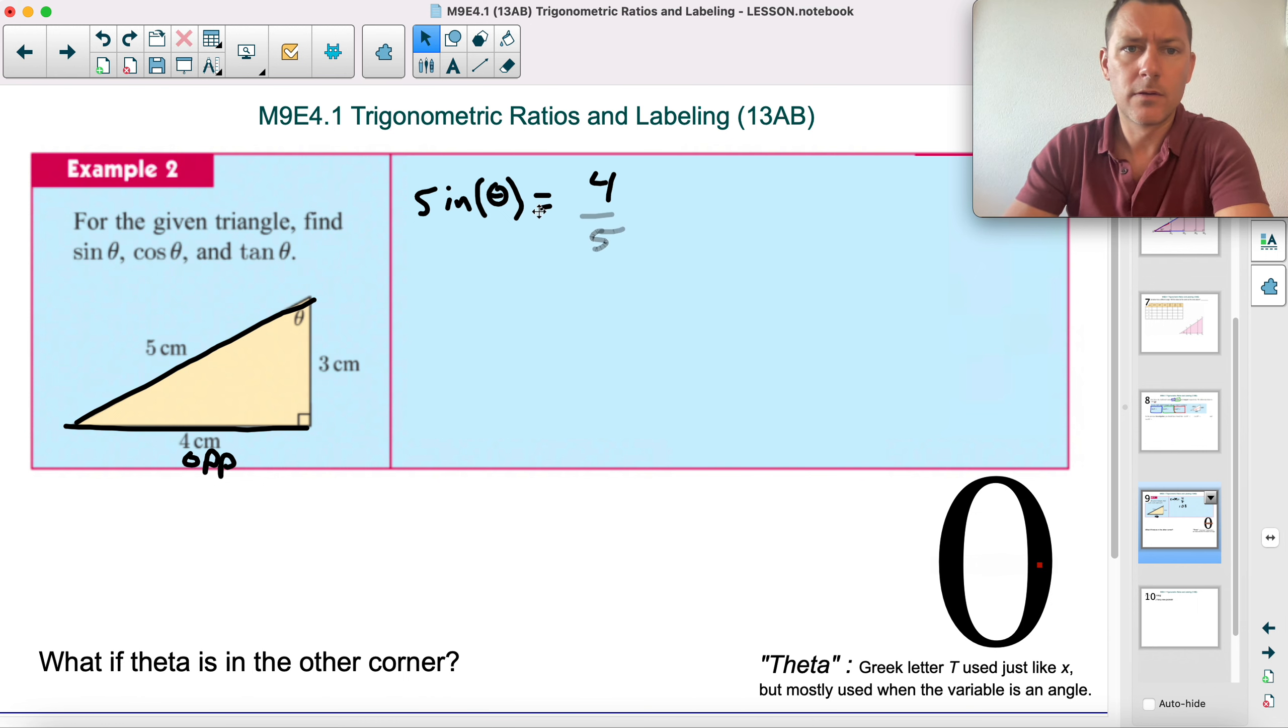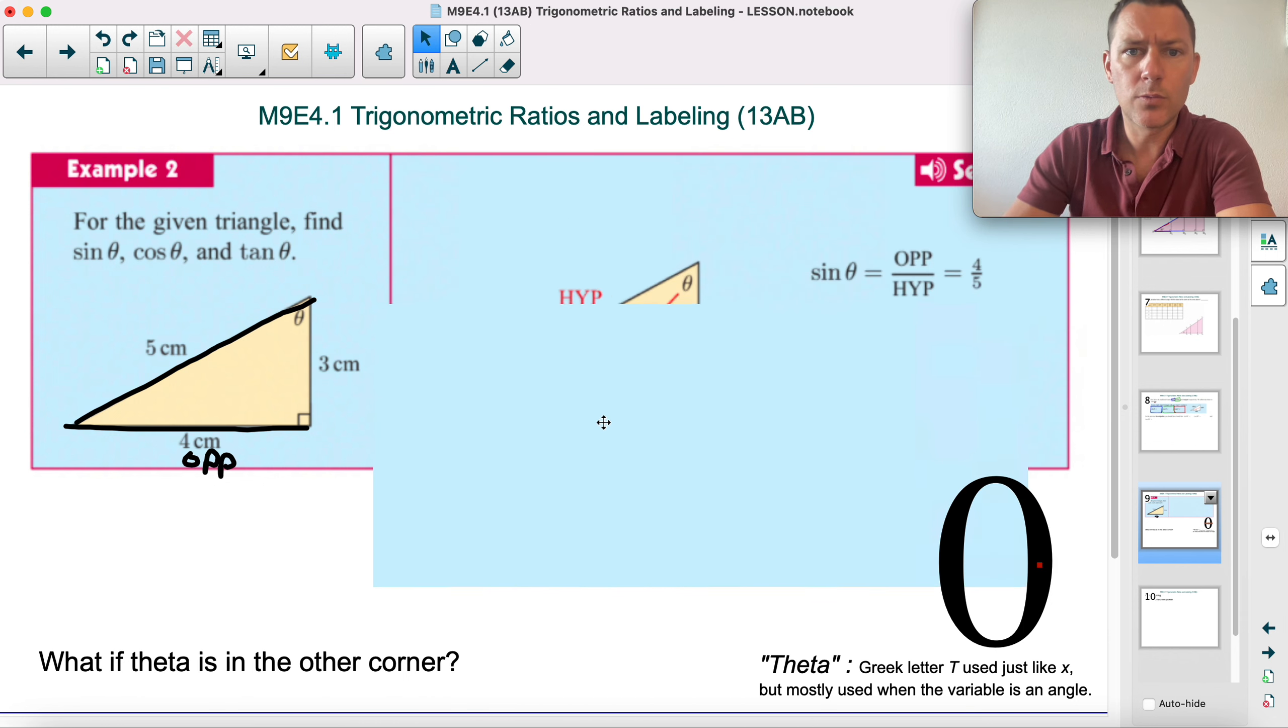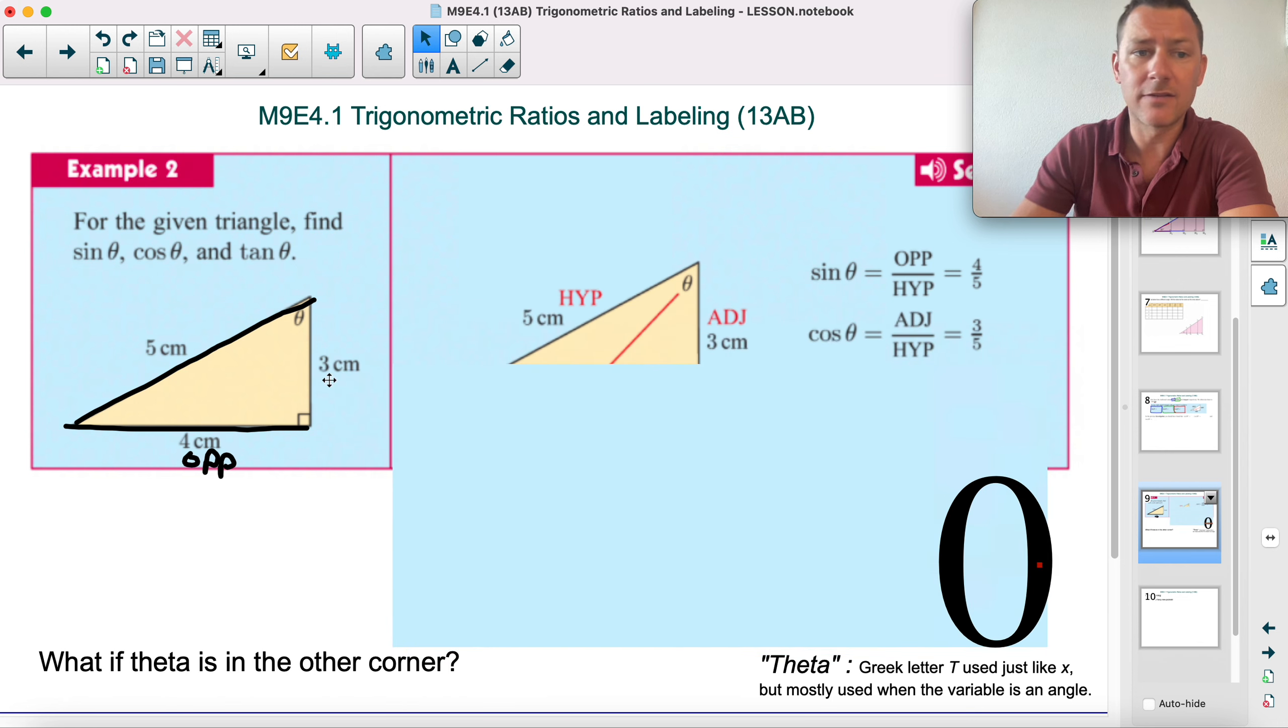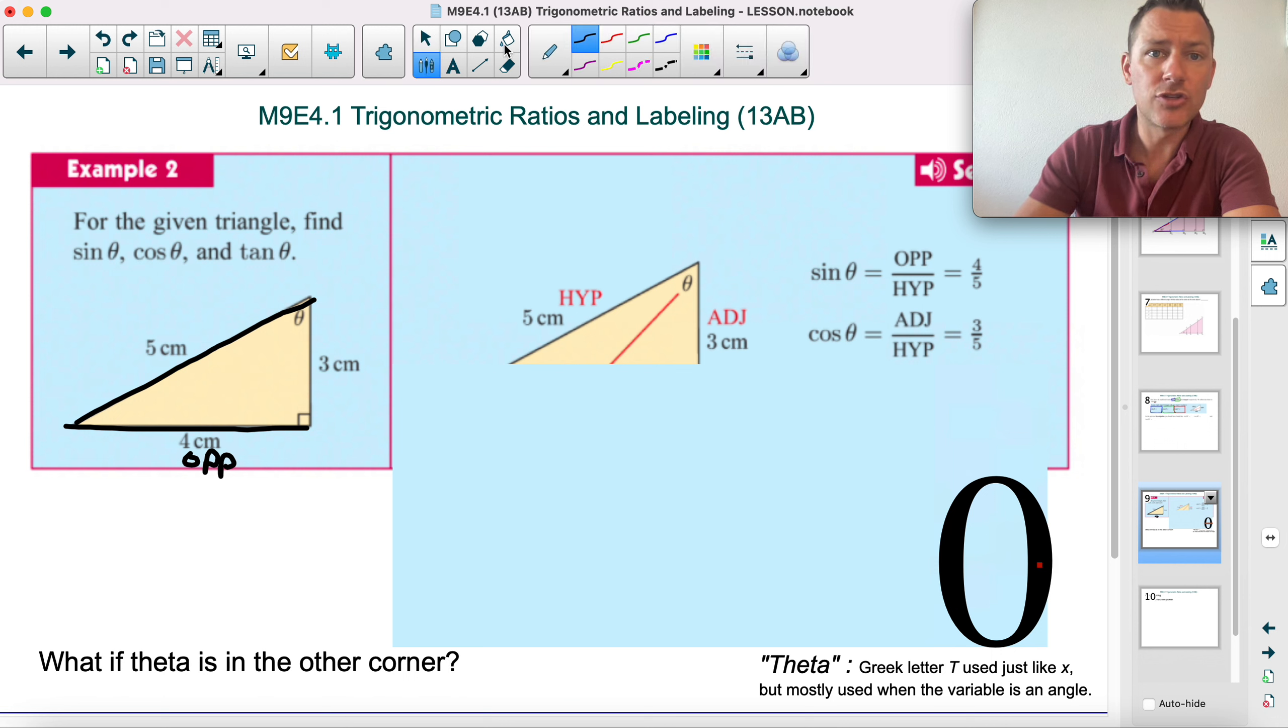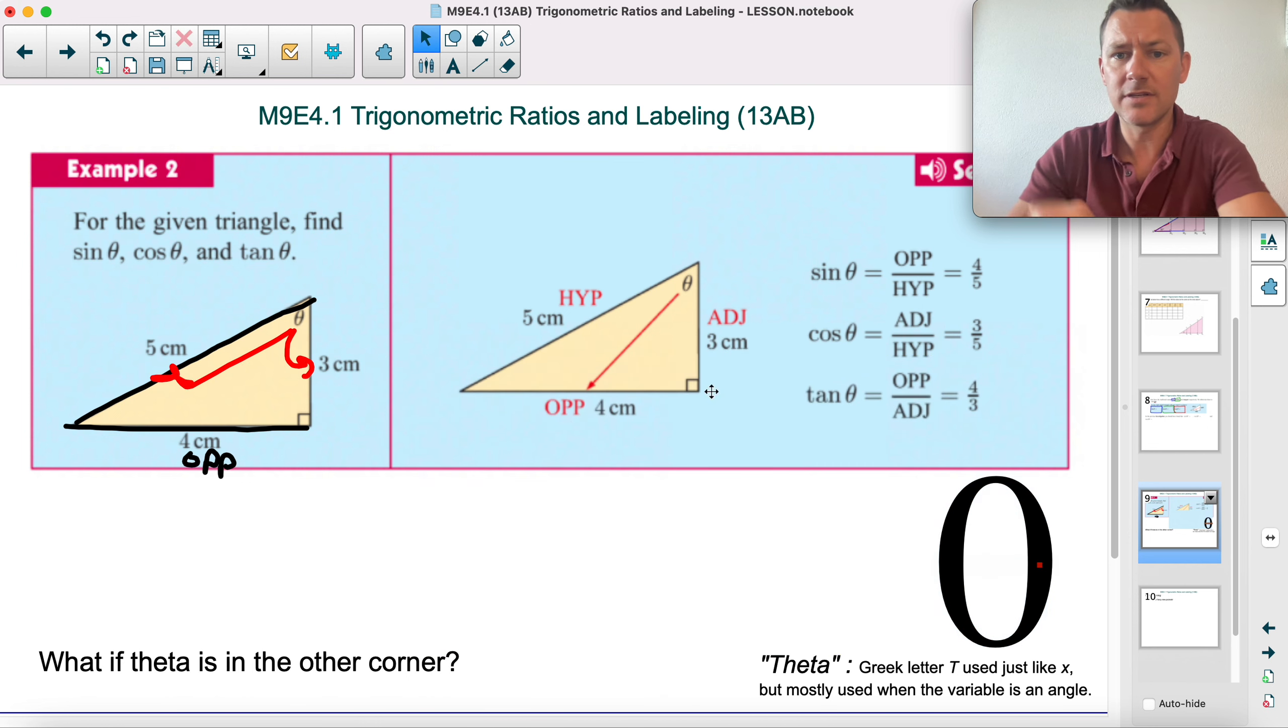Okay, so we found that sine was opposite over hypotenuse, four over five. Cosine is going to be the adjacent. The adjacent to this angle is next to it, so three. Hypotenuse is that one, so three fifths. And then tangent is the opposite, four over the adjacent which is three, four thirds. You can leave them as decimals, but that's fine as it is.